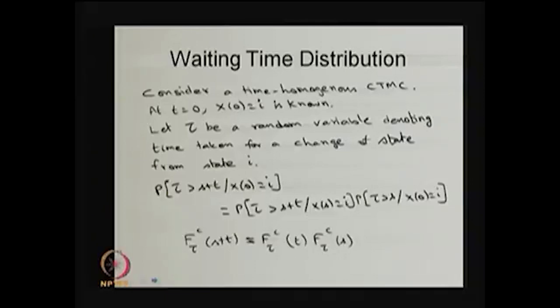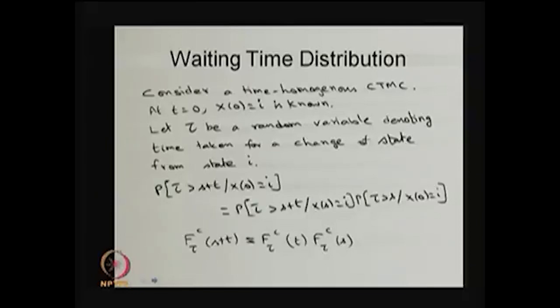I assume that at time 0 the system was in state i, that means X(0) = i, and the probability of X(0) = i is 1. Let me define the random variable τ (tau) as the time taken for a change of state from state i. A change of state means it does not matter which state it goes to — our interest is to find the waiting time distribution, the time spent in state i.